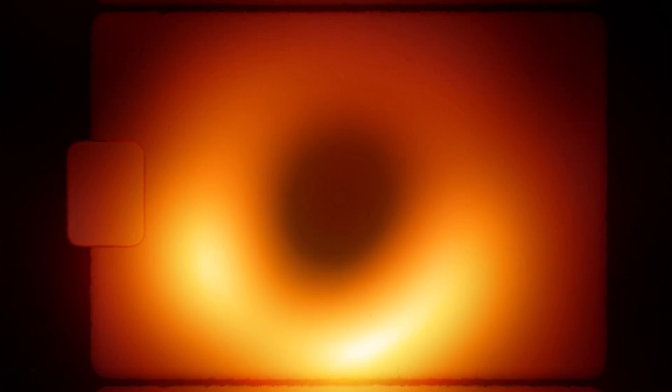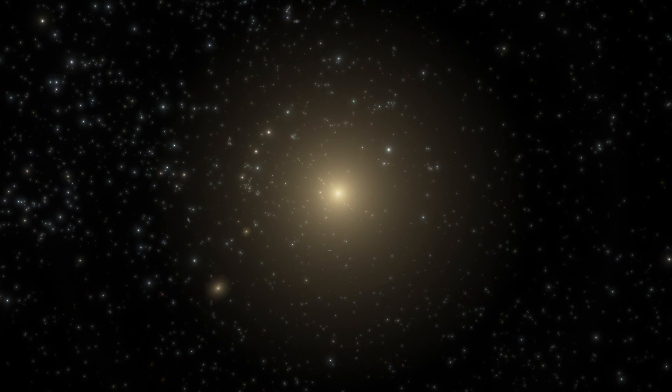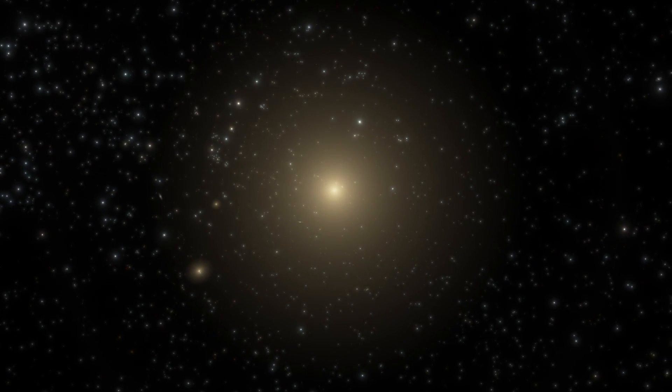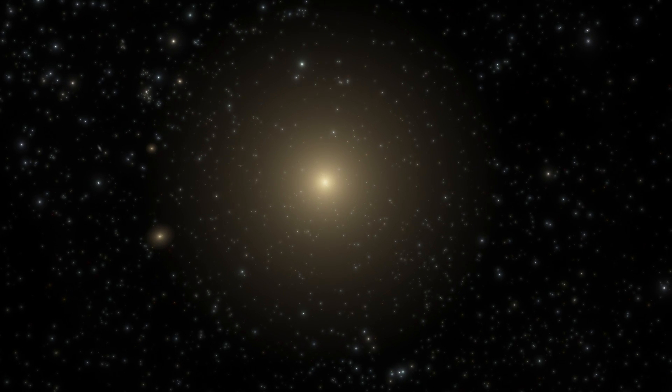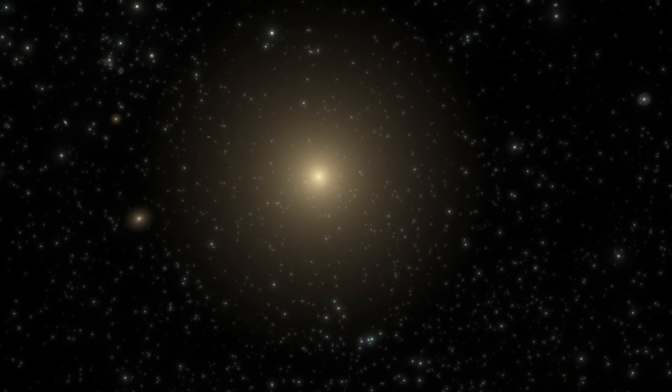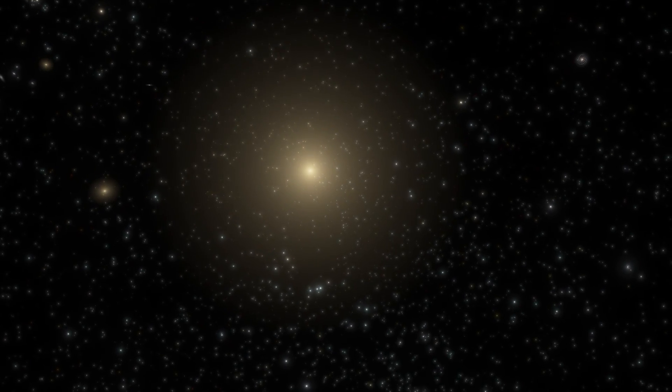In 2019, we got the first-ever picture of a supermassive black hole. This is the central supermassive black hole of Messier 87 galaxy in the nearby Virgo galaxy cluster. The black hole lies about 55 million light-years from Earth and has a mass 6.5 billion times that of the Sun.